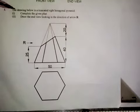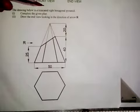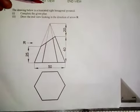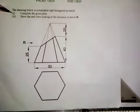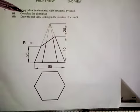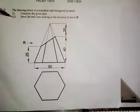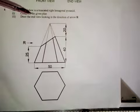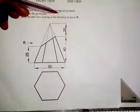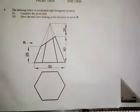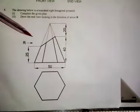The question says that the drawing below is a truncated right hexagonal pyramid. We are required to complete the given plan, then draw the end view looking in the direction of arrow ROR.